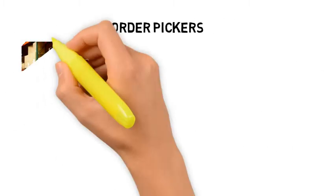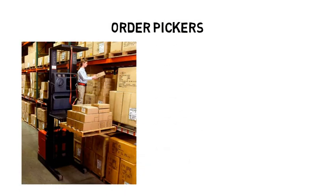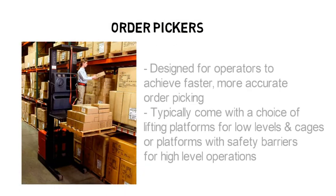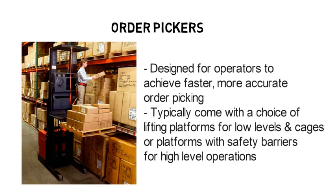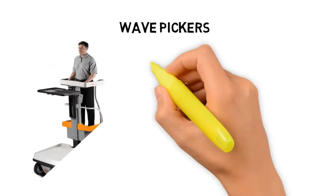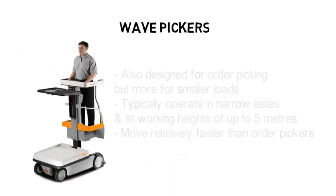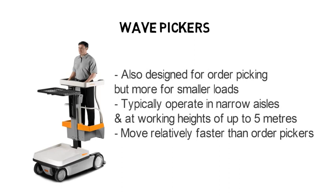Order pickers are designed for operators to achieve faster, more accurate picking. For low-level picking activity, the order picker comes with a simple lifting platform. For high-level operations, it may come with a cage or platform with safety barriers. In both cases, operators are required to put on a safety harness attached to a secure point on the order picker to prevent a fall from height. Wave pickers are also designed for order picking but more for smaller loads. They are usually smaller in size, typically operate in narrow aisles at stacking heights of up to 5 metres, and move relatively faster compared to standard order pickers.